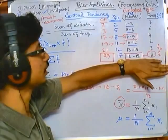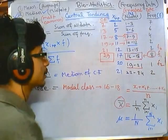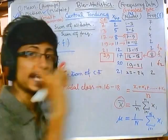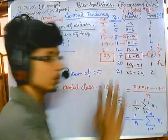I extended the data set because previously the data only went up to a certain point, and without extending it we couldn't have found f2. So I elongated this chain to get f2. We require f1, f0, and f2 for the exact mode calculation.